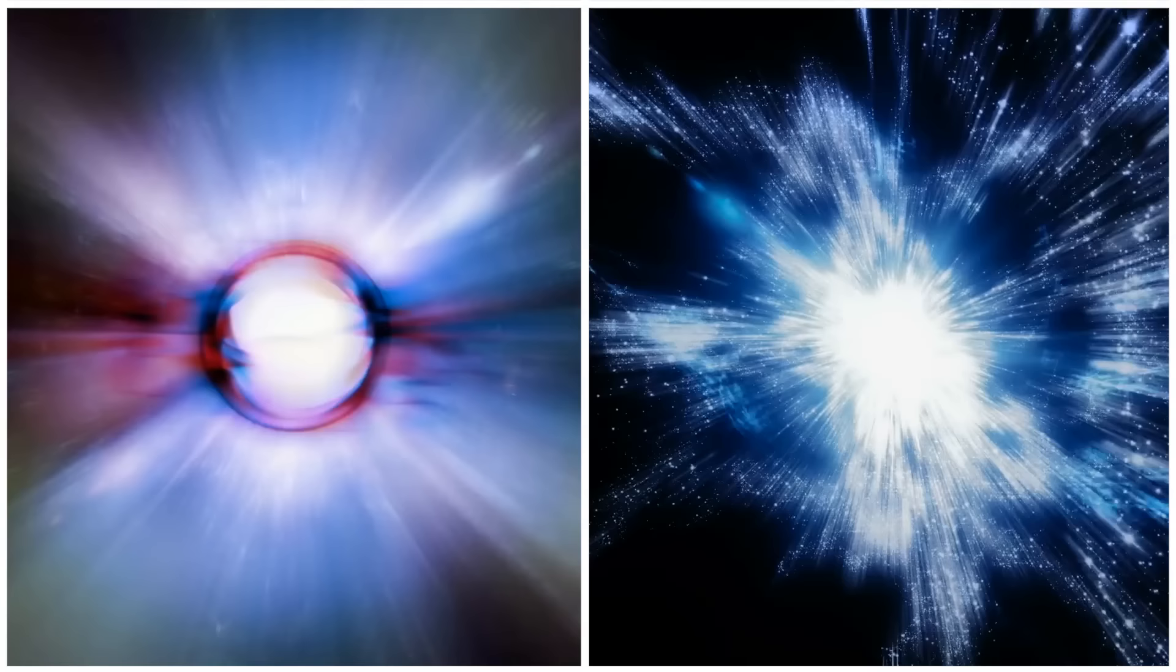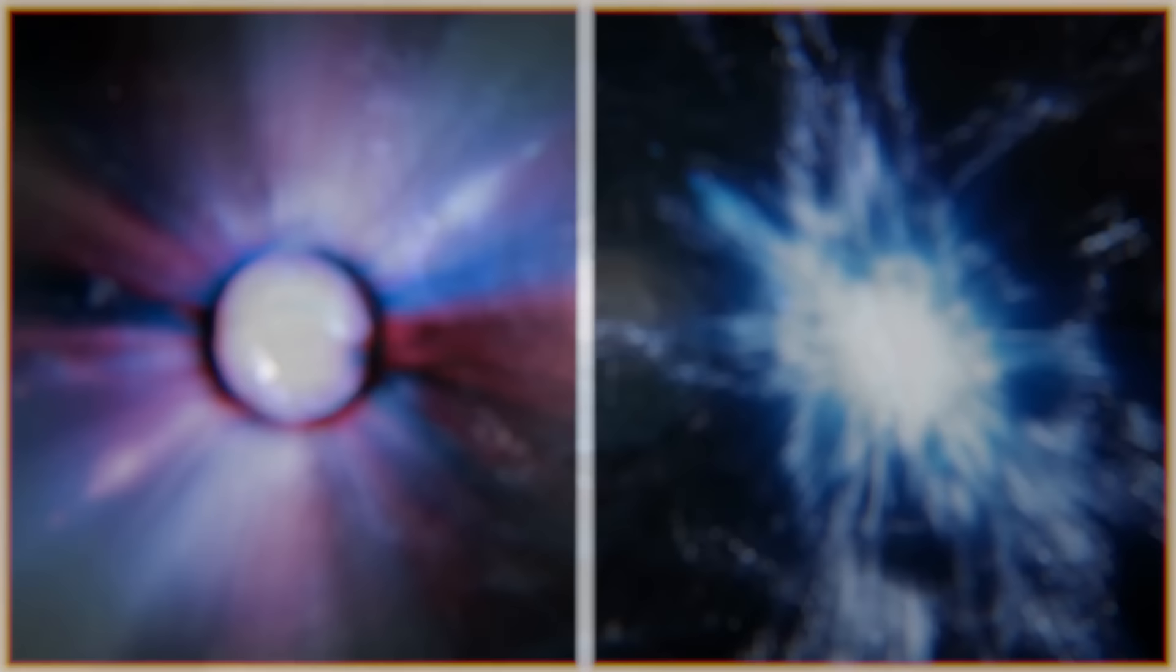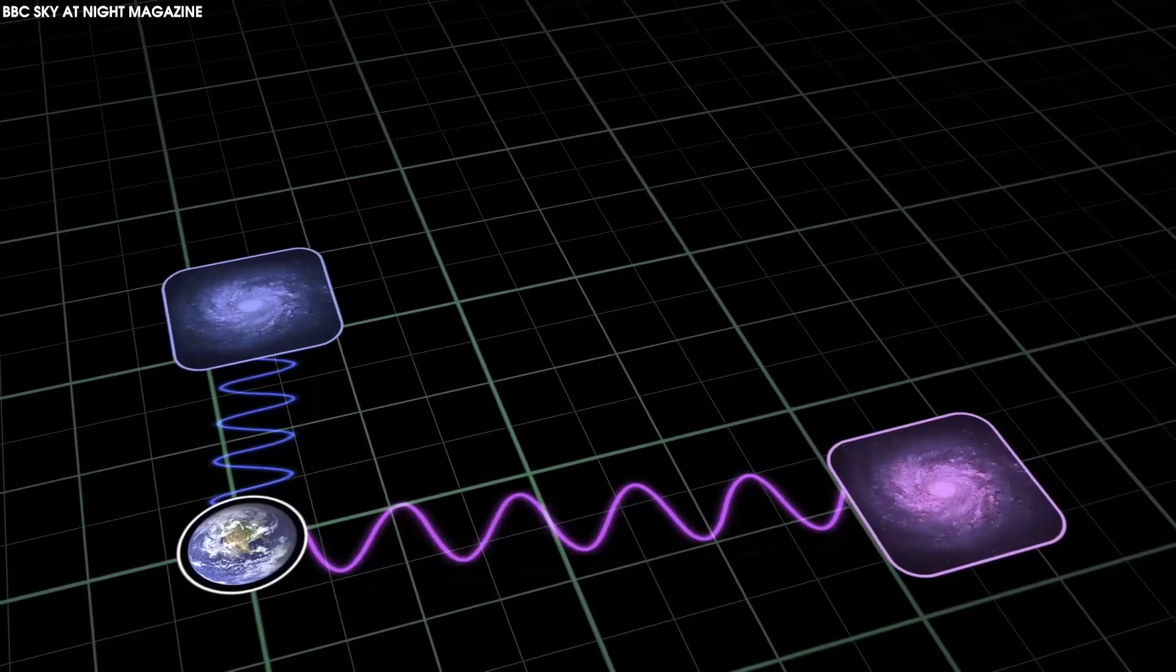Lo and behold, when you combine these two pieces of information, a new picture emerged. One where, on average, the farther away a galaxy was from us, the greater its light appeared to be shifted toward the redder, longer wavelength part of the spectrum.